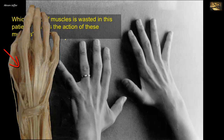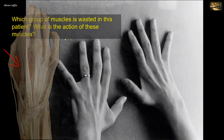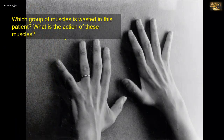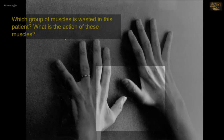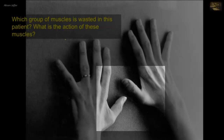All the interossei are supplied by the deep branch of the ulnar nerve. However, in terms of segmental innervation, they belong to the myotome of T1. In long-standing cases of denervation of these muscles, there is hollowness between the metacarpal bones as seen in this patient because of the wasting of the interossei.